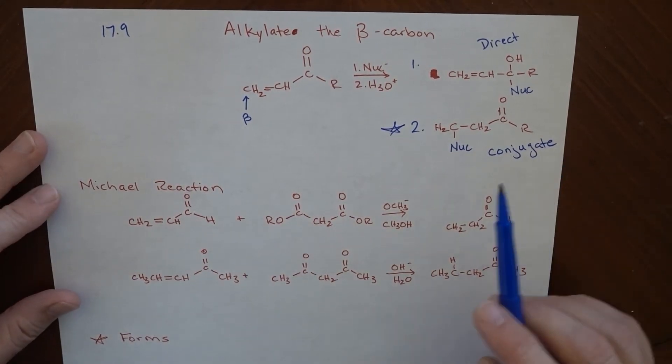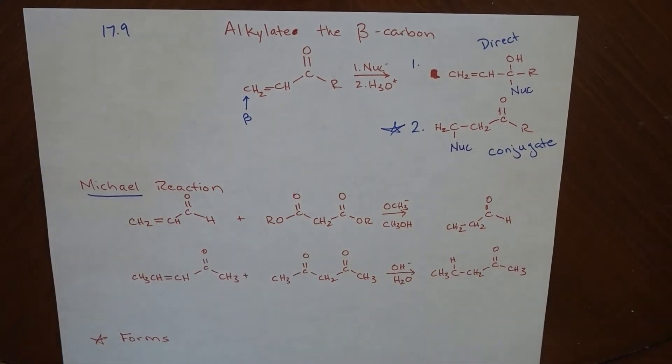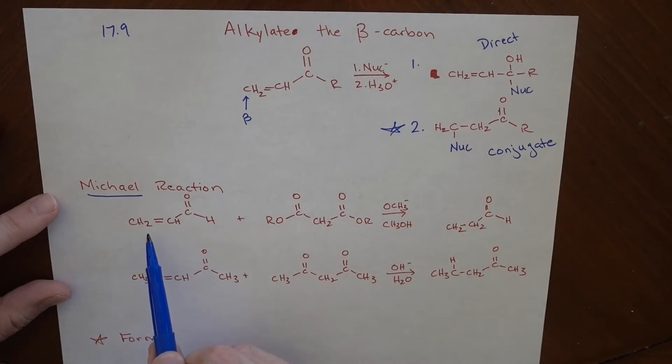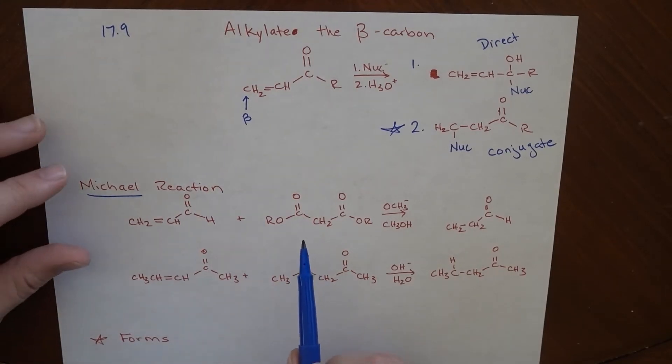So here is what's called a Michael reaction, named for Michael, and I'm just going to say that's me because I'm Michael. And the reaction goes as follows. We've got a conjugated system here where we've got a beta carbon and we've got this species right here.